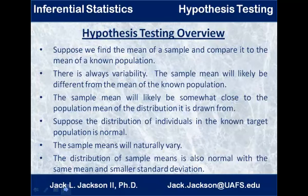Suppose we find the mean of a sample and compare it to the mean of a known population — that's the context for this lecture. There's always some variability. If we take a sample, we expect the sample mean will probably be different from the mean of the known population. If we took another sample, we'd get a different mean, and again and again. Remember that these sample means will have a distribution of their own, and the mean of that distribution should be the mean of the target population if the sample actually came from that population.